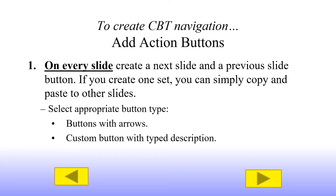On every slide we're going to create a next and a previous button. If you create one set and keep it standardly in the corners — consistency would dictate placing the forward button in the lower right-hand corner and making the button small, and conversely placing the go-back button in the left-hand corner and keeping it relatively small. If you create one set of buttons like this, you can then simply copy and paste them onto every slide.